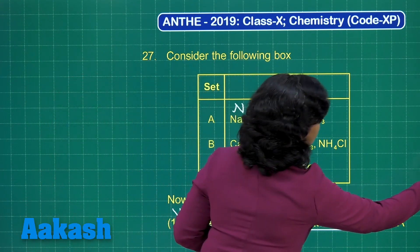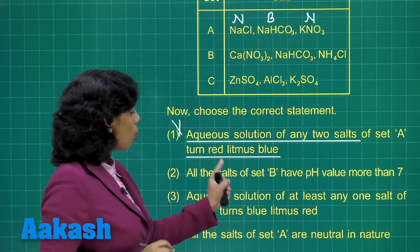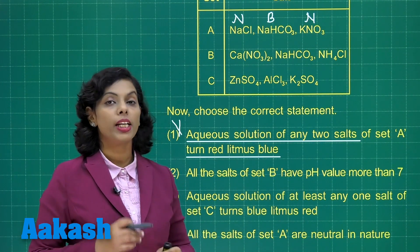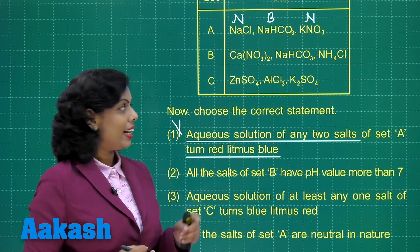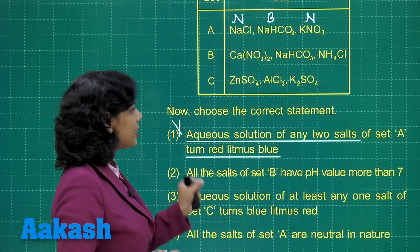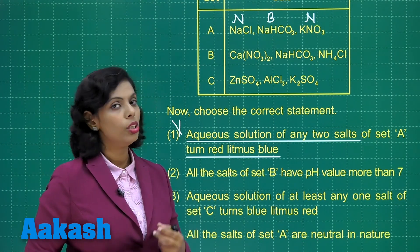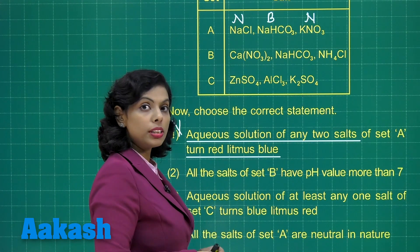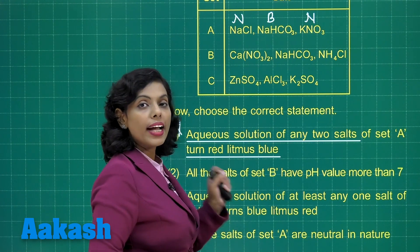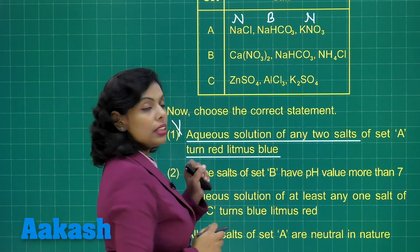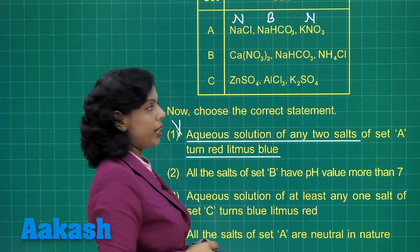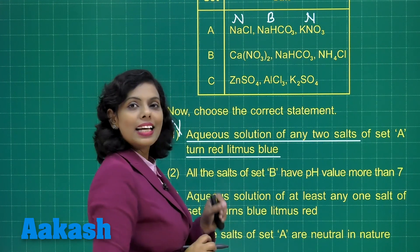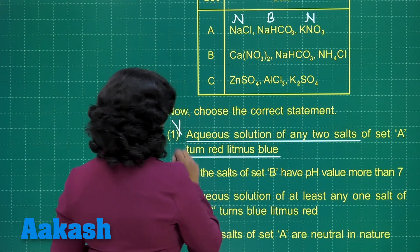Option 2 states: all the salts of set B have pH value more than 7 — meaning all should be basic. In set B: calcium nitrate is a neutral salt, being from strong acid HNO₃ and strong base calcium hydroxide; NaHCO₃ is a basic salt; and ammonium chloride is an acidic salt. So this statement is also incorrect.